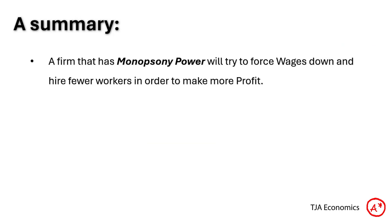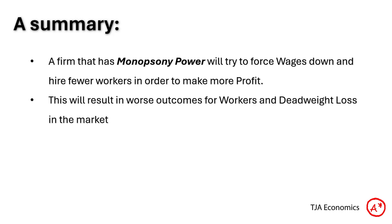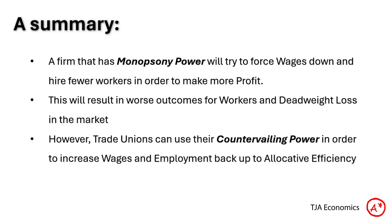In summary: a firm with monopsony power will try to force wages down and hire fewer workers in order to make more profit. This results in a worse outcome for workers and deadweight loss in the market — workers are paid less and fewer are hired. However, trade unions can use their countervailing power to increase wages and employment back up to the allocatively efficient level.